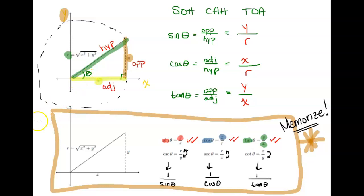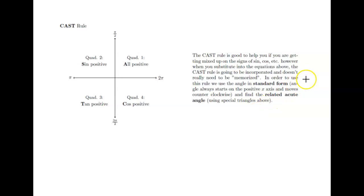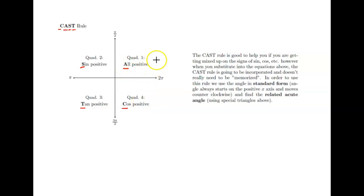As we go through and solve for angles or side lengths, there is a helpful trick called the CAST rule. You may have seen this before — C, A, S, T — and it tells you which trig ratio is positive in each quadrant. Cosine is positive in quadrant four, All are positive in quadrant one, Sine is positive in quadrant two, and only Tangent is positive in quadrant three. Let's figure out why.